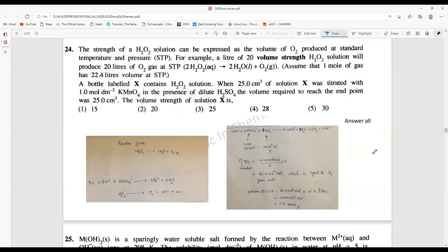For an example, if a reaction gives 10 liters of oxygen, the volume strength would be 10. They assume this is at STP 22.4. You should know that a bottle labeled X contains H2O2 solution. They are going to treat this with KMnO4 in the presence of acidic condition and the end point was given, and they are asking the volume of the solution.